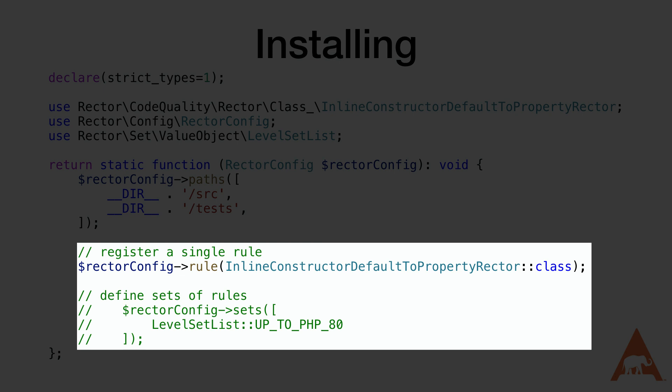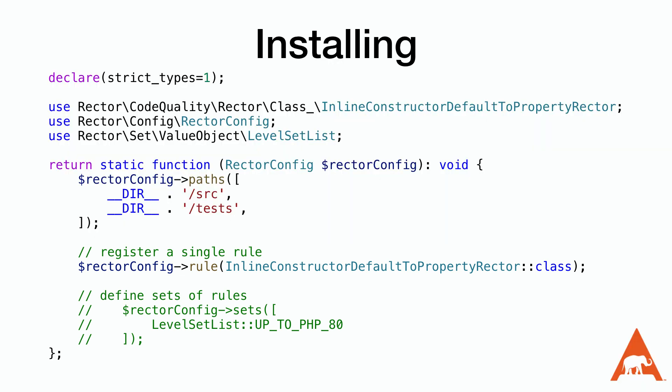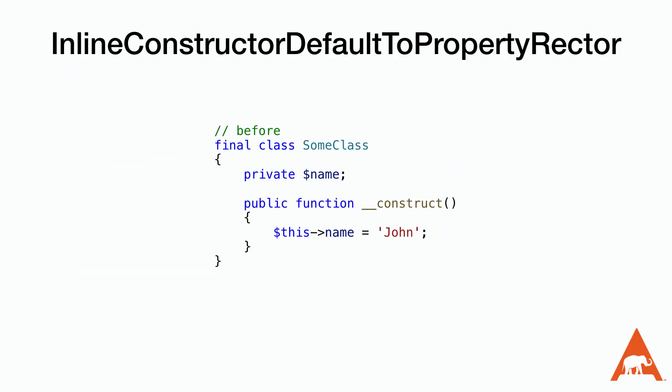Next, we define the rules and the sets of rules that we want to apply to our code base. We currently only have the inline constructor default to property Rector enabled, which moves an assignment of a constant value into the property creation. It's a good example of how to enable a single rule, but what's more helpful to us is the section below where it enables a set of rules. A set of rules includes multiple rules so the rector.php file doesn't contain hundreds of lines of all the rules we want to have enabled.